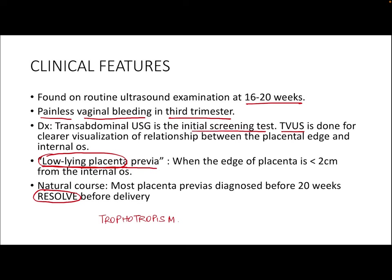Towards term, the placenta essentially shifts away from the cervical os and most cases resolve before delivery. However, there are three features that increase the chance of persistent placenta previa at term: first, if the placenta previa is still over the cervical os in the third trimester; second, if the placenta extends more than 2.5 centimeters over the cervical os; and third, if the placenta is posteriorly located.